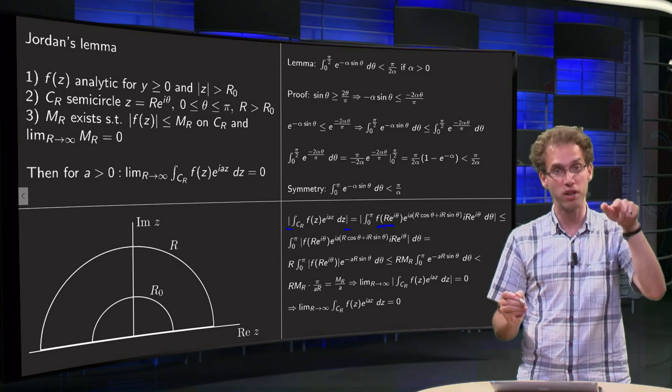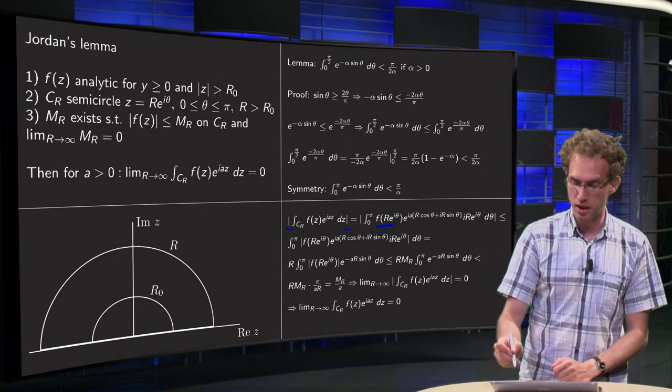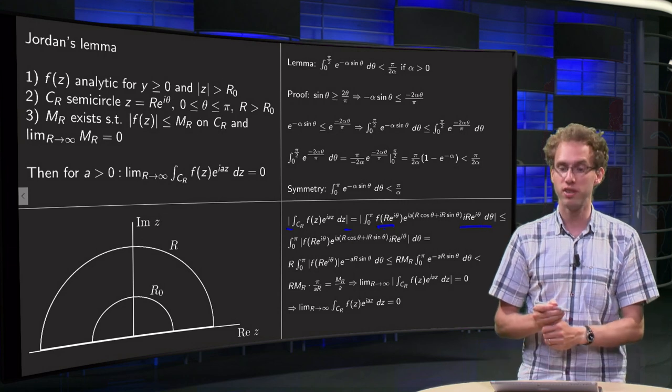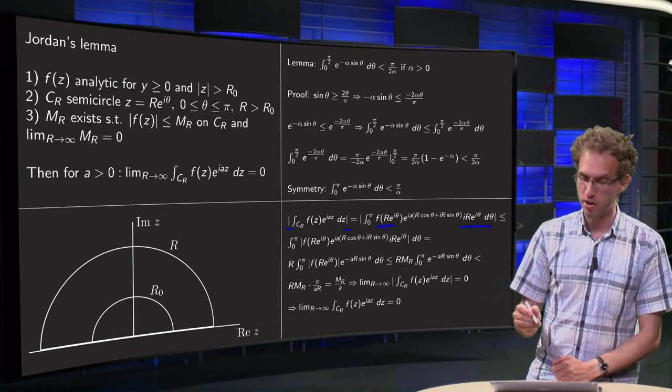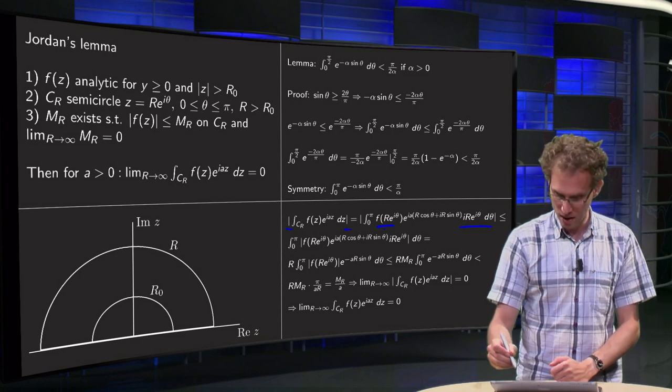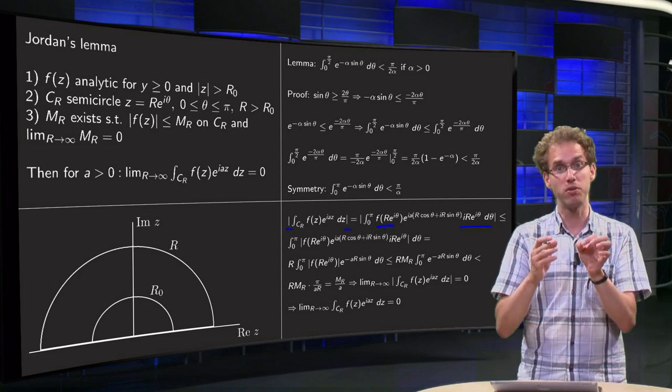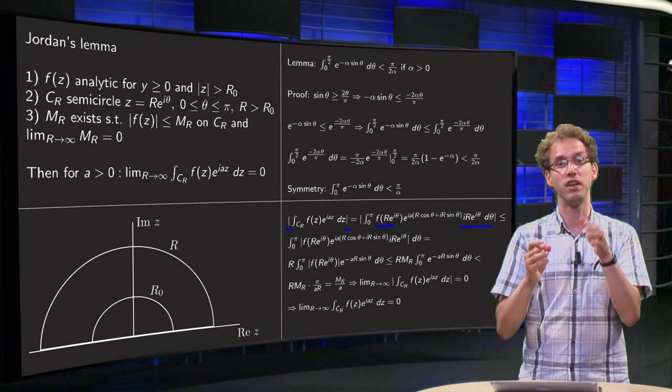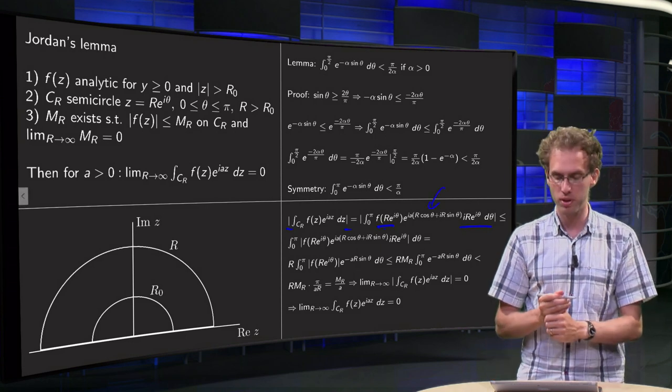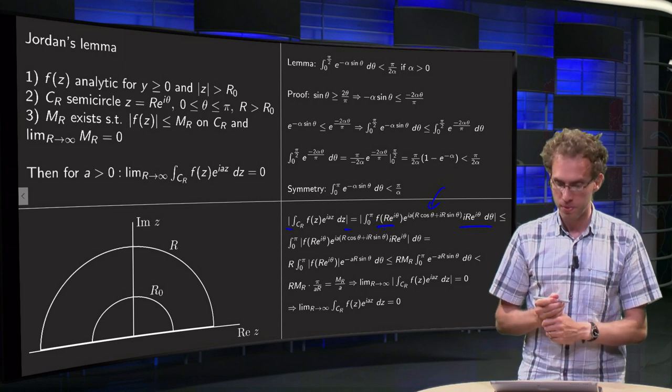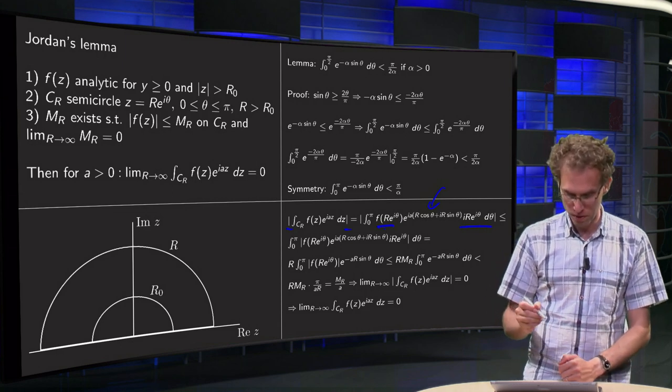You integrate from 0 to π over 2θ. The dz equals iRe to the power iθ dθ. You plug in z equals Re to the power iθ. And you write z equals R times e to the power iθ equals R times cos θ plus i sin θ in your exponent. And clean up some of the mess.